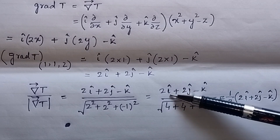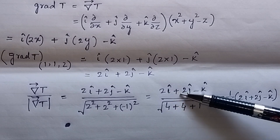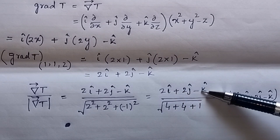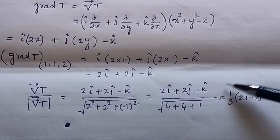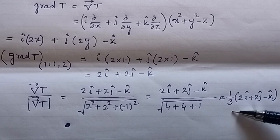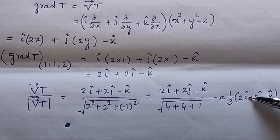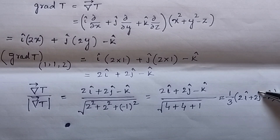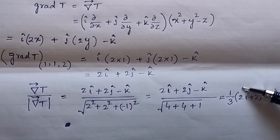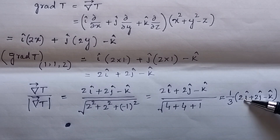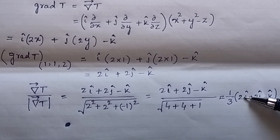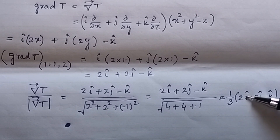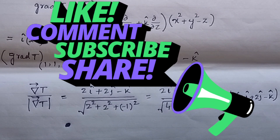In the numerator we have 2i-cap plus 2j-cap minus k-cap. So the answer will be one-third times (2i-cap plus 2j-cap minus k-cap). The mosquito should fly in this direction so that it will get warm as soon as possible.